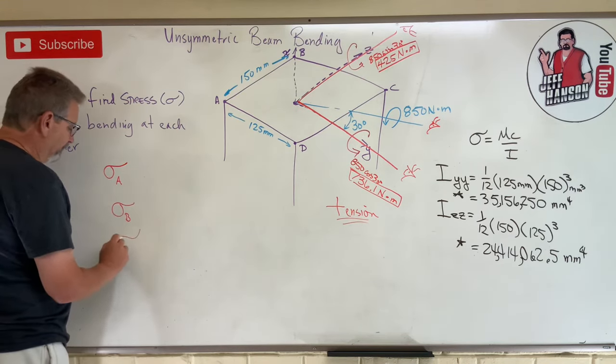Now we go to corner C. Bending around Y, corner C is in tension — that's positive: +(736.1 × 1000 × 75) / 35,156,250. For the Z-bending towards you, point C is now on the front side — the compression side — so that's negative: −(425 × 1000 × 62.5) / 24,414,062.5.